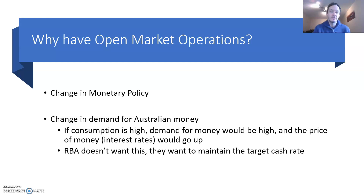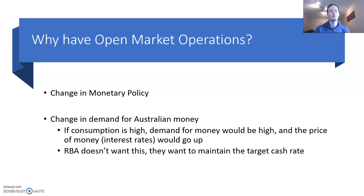Let's start very simply: why do we even have open market operations? There are really two key reasons why the Reserve Bank does this. The first one is sometimes there's a change in monetary policy — that's just the target cash rate, currently set at 0.25% — and if they want to reduce that target cash rate, they're going to have to alter interest rates in order for that to have an effect in the economy.